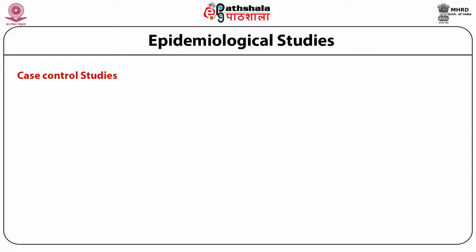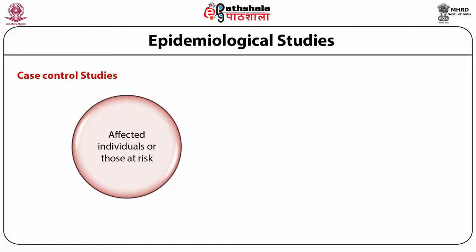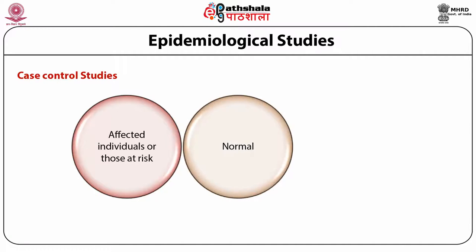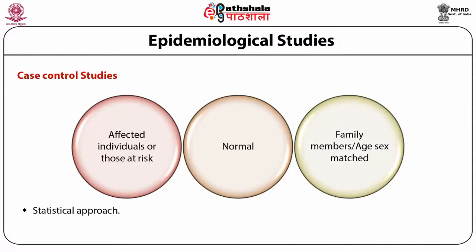In case-control studies, affected individuals or those at risk are considered as cases, and those who do not possess the character are included as controls. Association of risk mutant alleles or other genetic factors is assessed through statistical approaches. In population-based association studies, both case and control are collected from age-matched individuals from the same population, as different populations have varied gene pools. In family-based association studies, controls are the family members who are not affected by the trait under consideration.